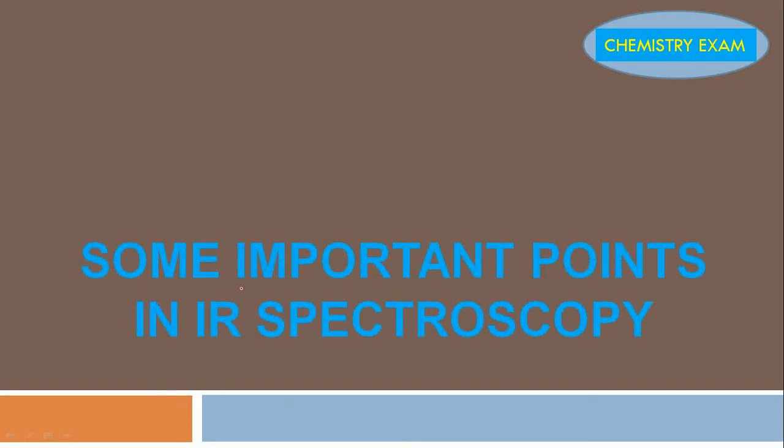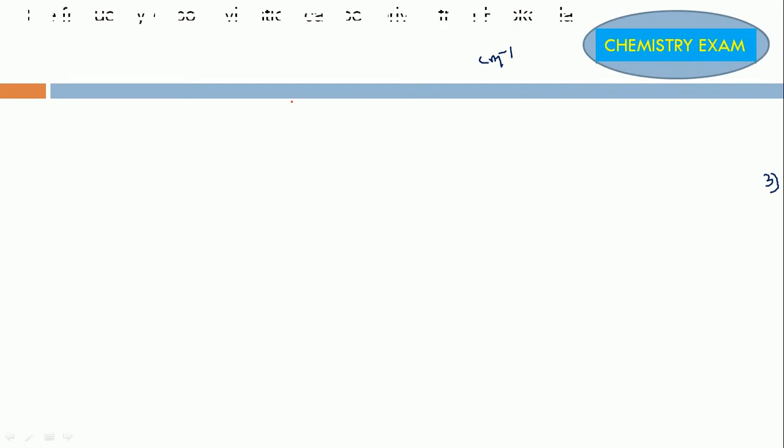Welcome to everyone. Today we are going to discuss some important points in IR spectroscopy. Normally IR spectroscopy is used for identification of functional groups. We can get ideas from IR spectroscopy. The frequency of bond vibration can be derived from Hooke's law.